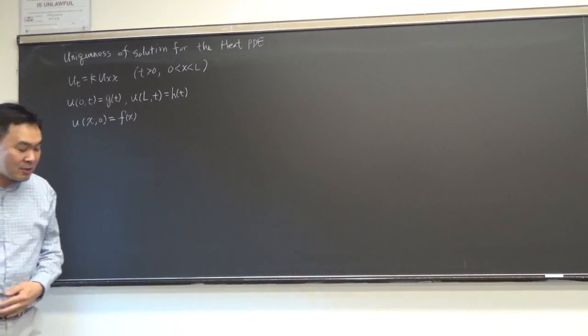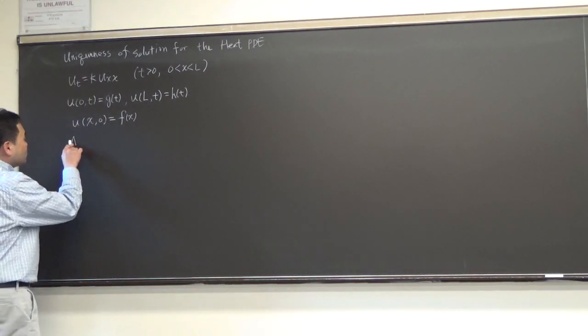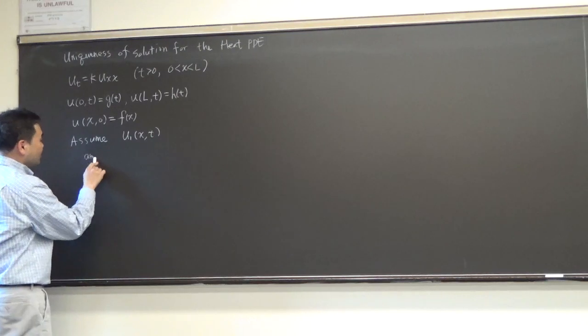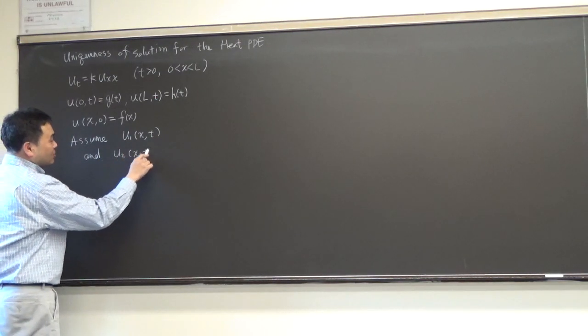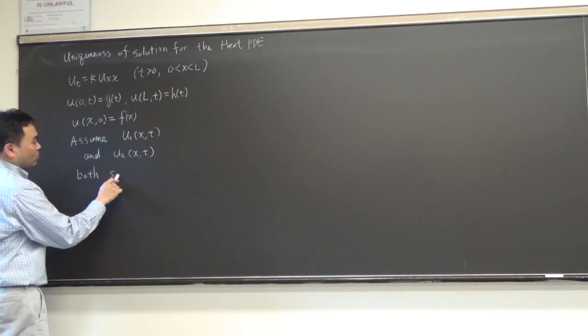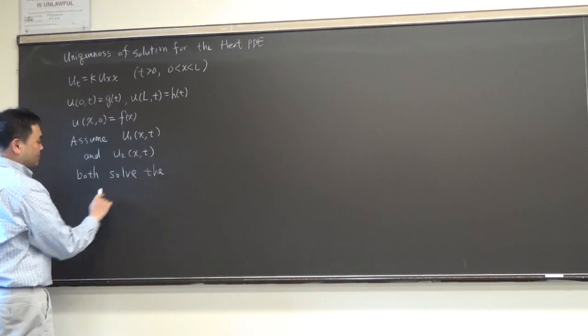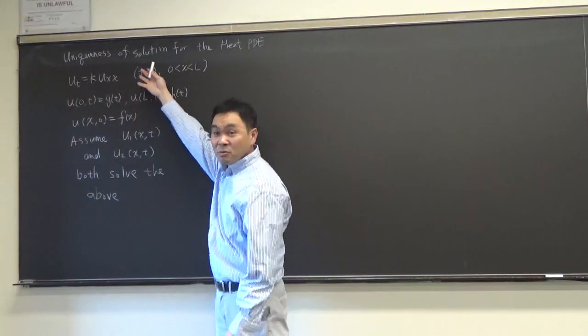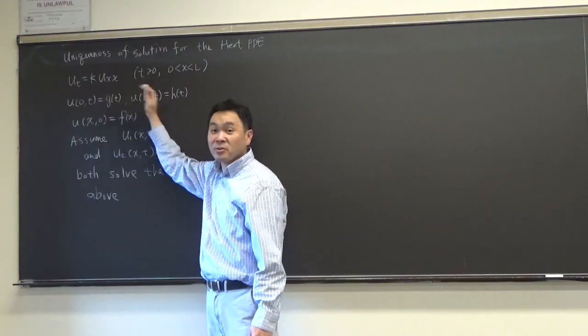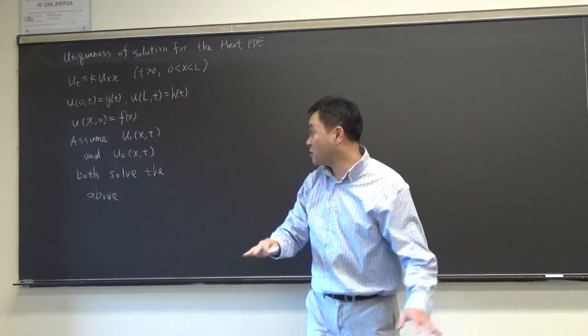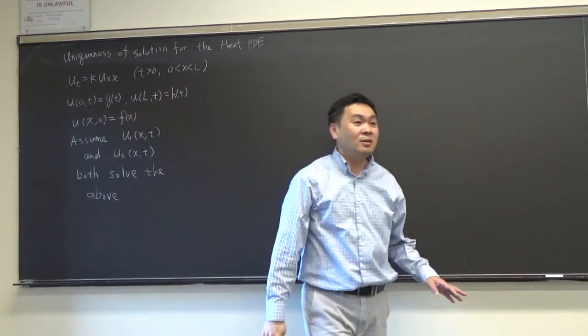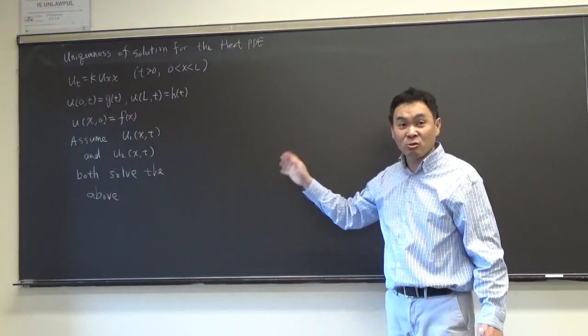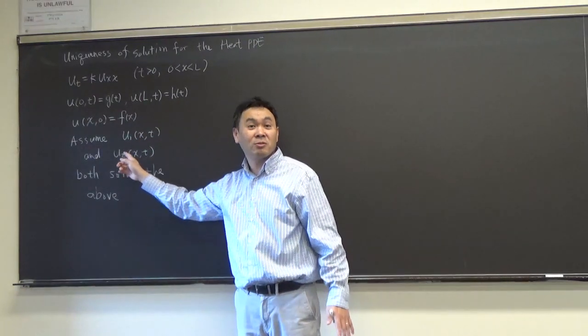So the way we go about it is, let's assume that, assume u1(x,t) and u2(x,t) both solve the above. Let's say u1, if you plug it in, it satisfies the heat equation, it satisfies the boundary conditions, it satisfies the initial condition, and there's u2 that also does the same. Now, we would be done showing that the solution is unique if we can show that u1 is equal to u2. Agreed?